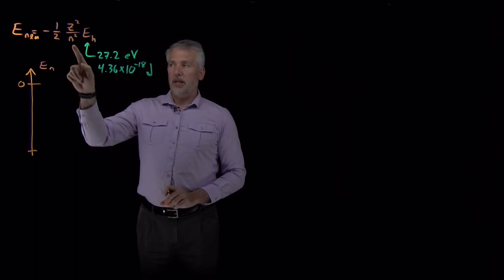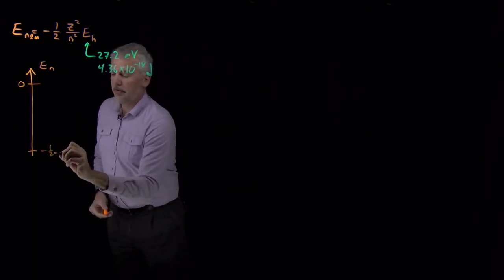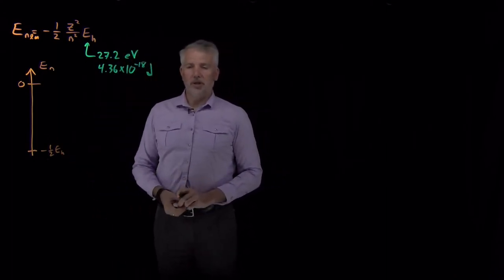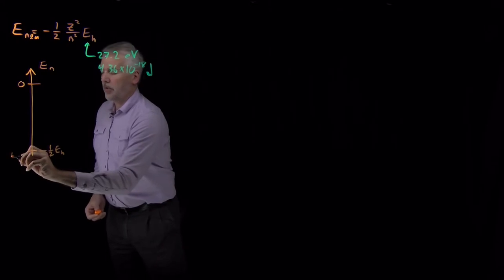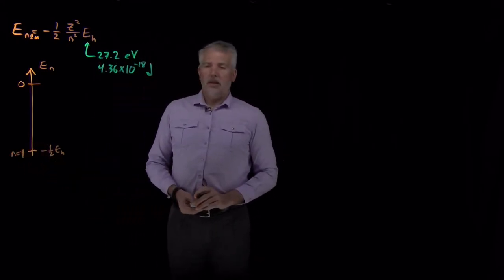the lowest energy it can have is when N equals 1. So the energy is going to be minus half of a Hartree, so negative 13.6 eV. So that would be for the N equals 1 state for the electron.